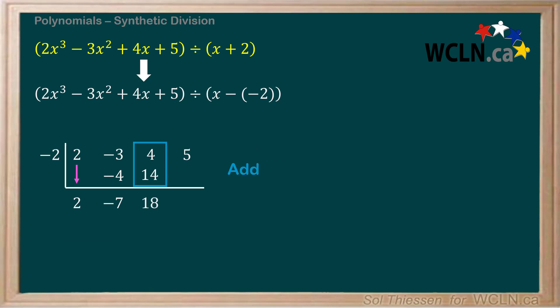Again, we repeat. Negative 2 times 18 produces negative 36, which we write under the constant term, 5. We then add the 5 and the negative 36 to get negative 31. Since the last column is filled in, we now know that the division is complete.